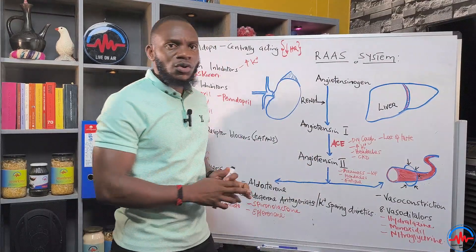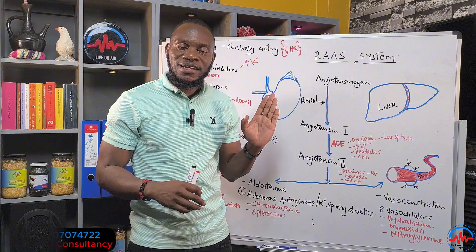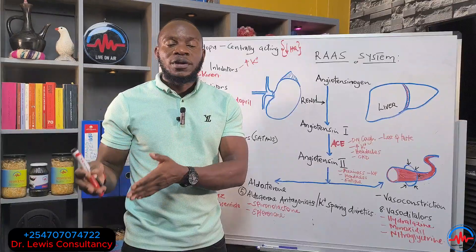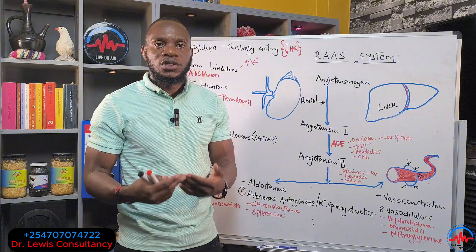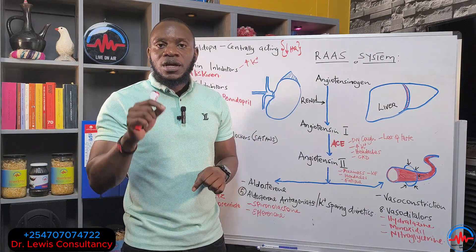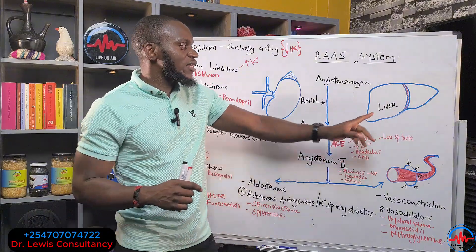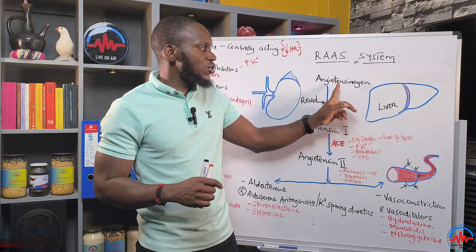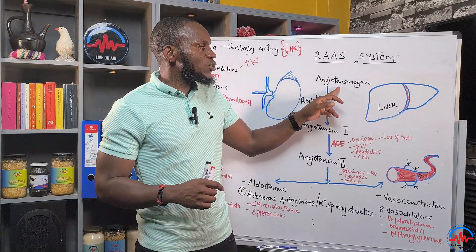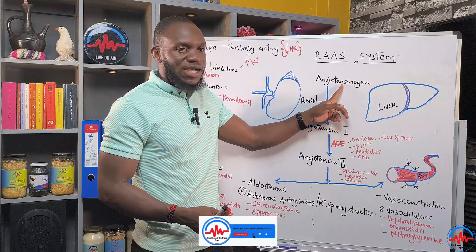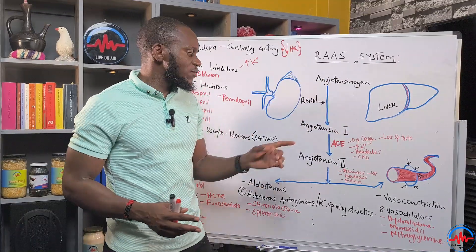We have three organs involved: one is the liver, two is the kidneys, and three is the lungs. When blood pressure is going down — say you've done an excess workout, you've bled during an accident and your blood volume is falling — the kidneys will sense that and produce an enzyme called renin. Renin is the activator of a protein coming from the liver called angiotensinogen. The liver produces angiotensinogen, the kidneys produce renin, and renin acts upon angiotensinogen circulating in the blood to clip it and make it active — that is angiotensin 1.